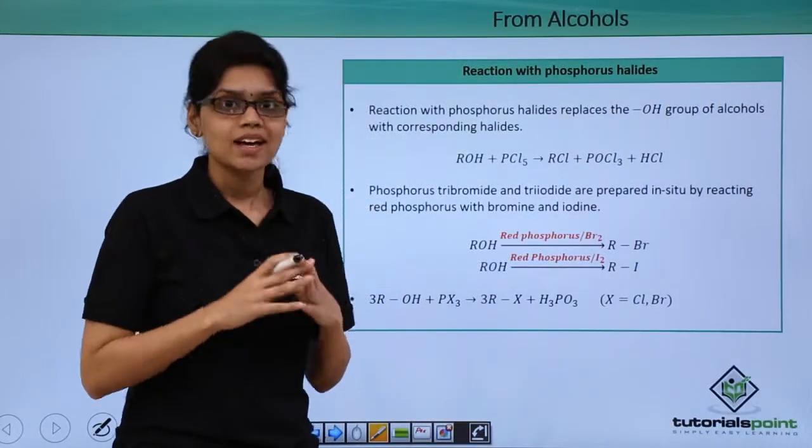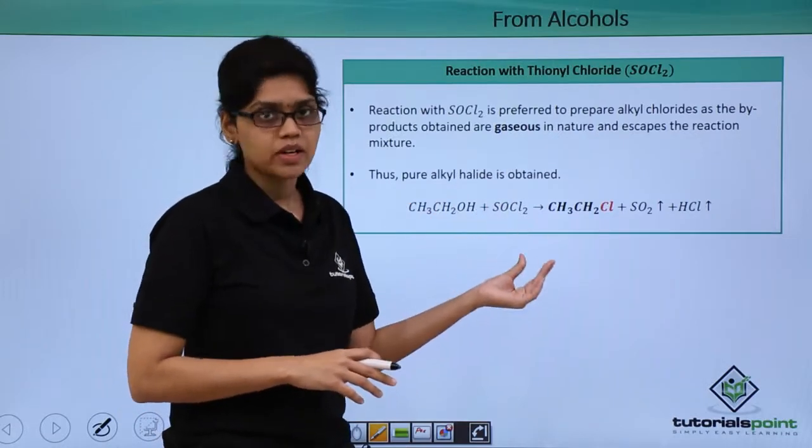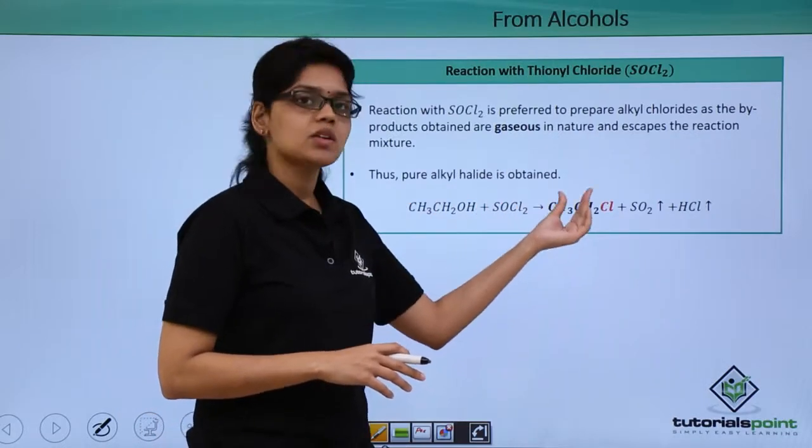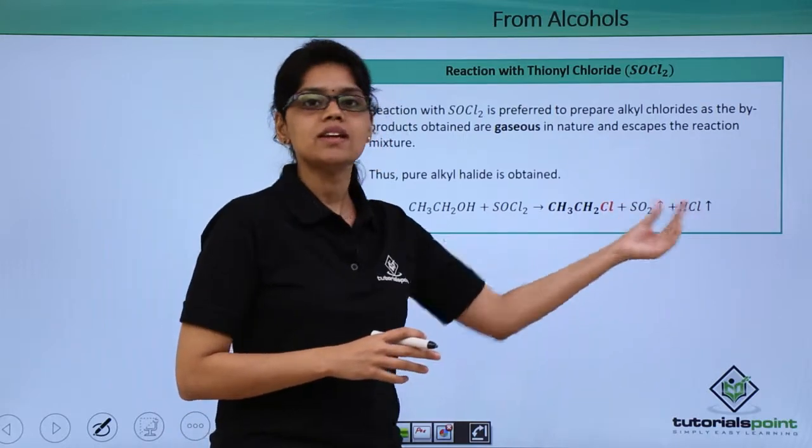The next reagent that we are going to discuss is thionyl chloride. As you can see, when alcohol reacts with thionyl chloride SOCl2, alkyl chloride is obtained and the byproducts obtained are SO2 and HCl.